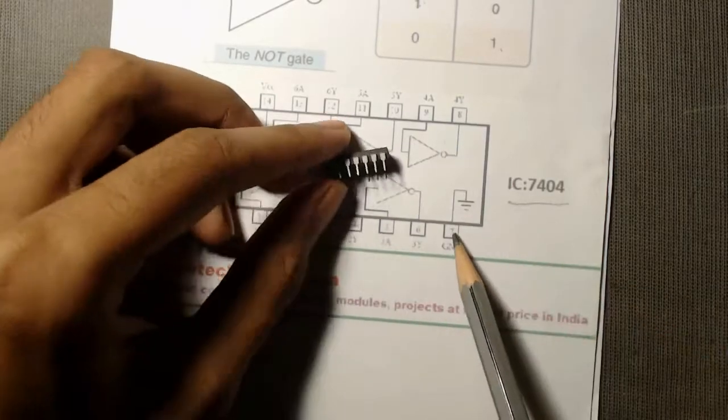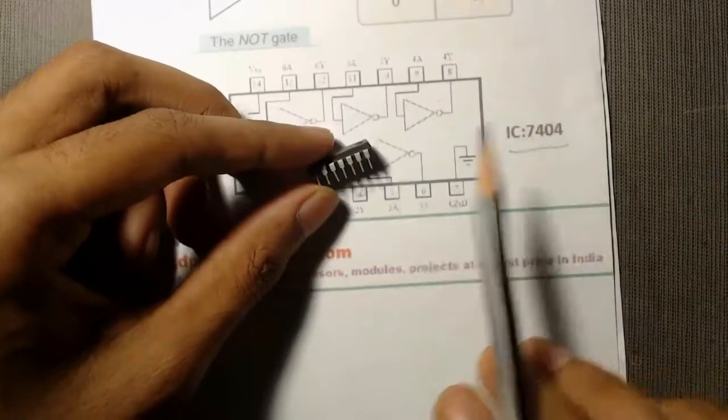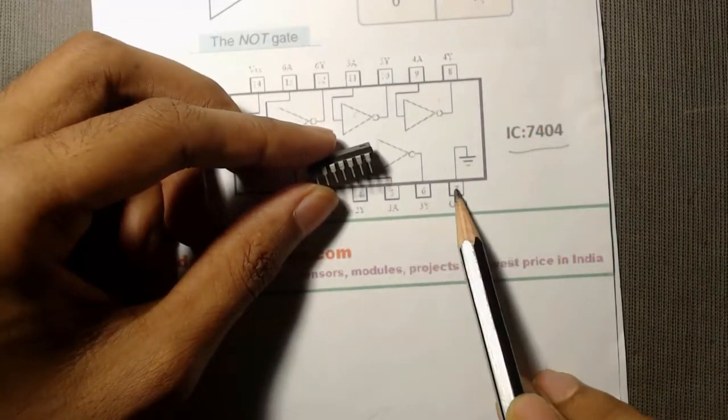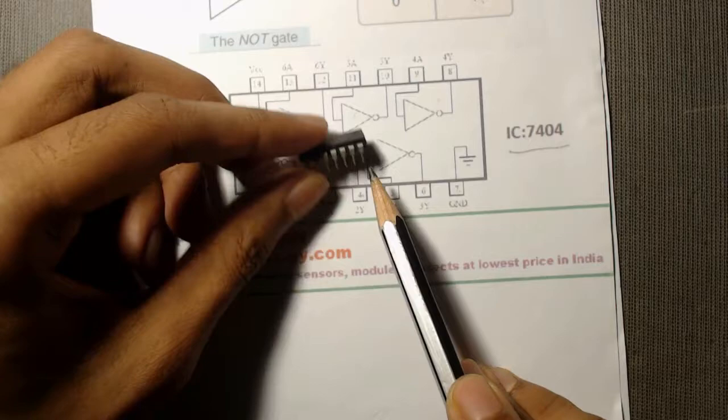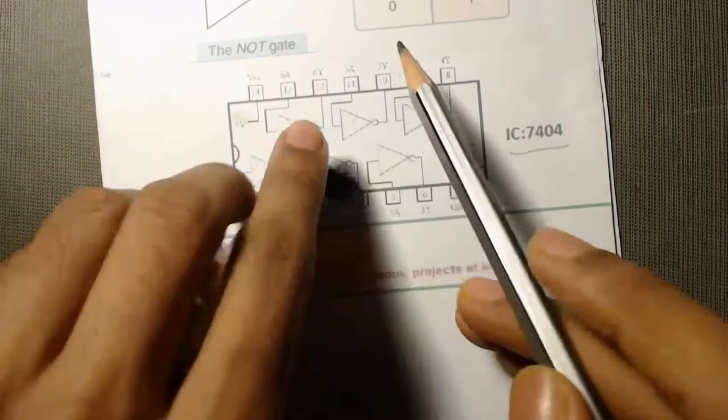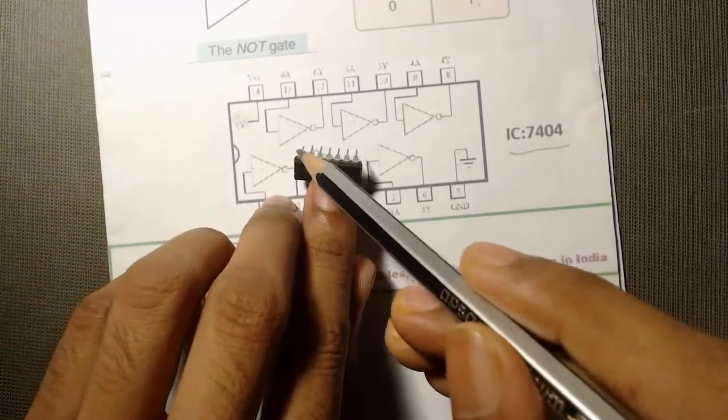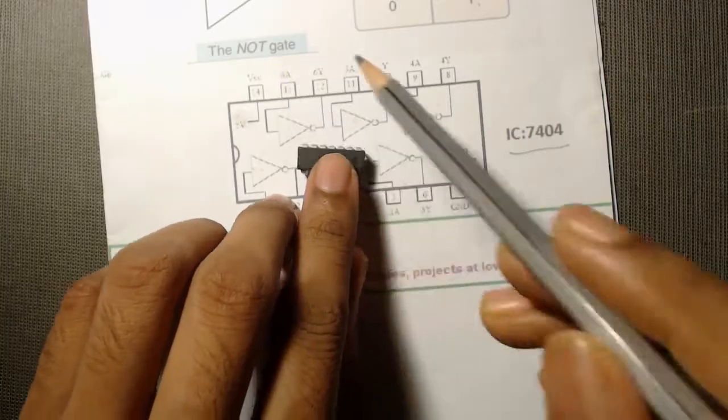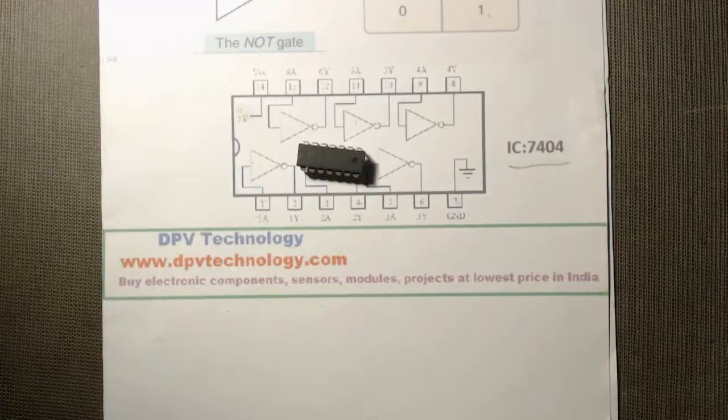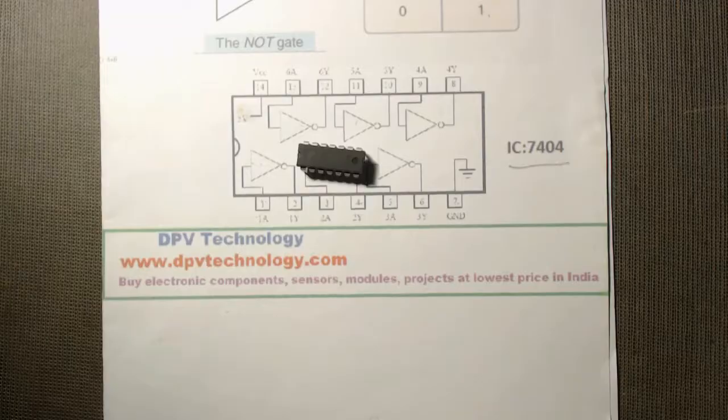We have to connect this pin number 7 to ground pin, that means we have to connect it to negative terminal of our battery, and this pin number 14, we have to connect it to positive terminal of our battery. So let us first insert it into the breadboard.